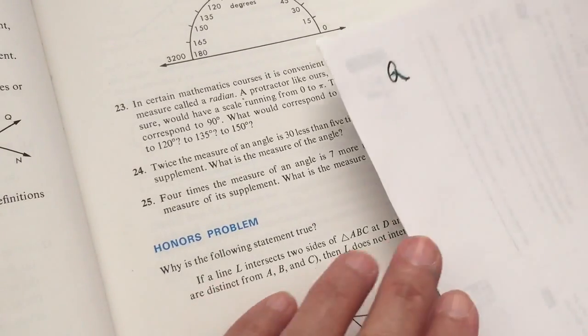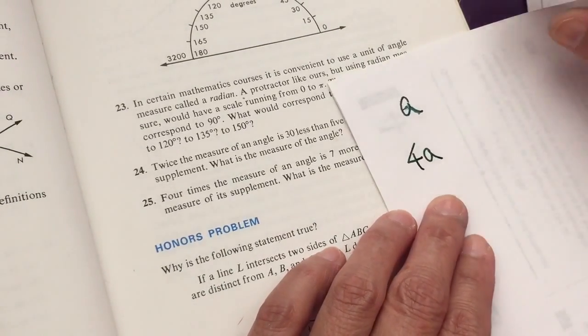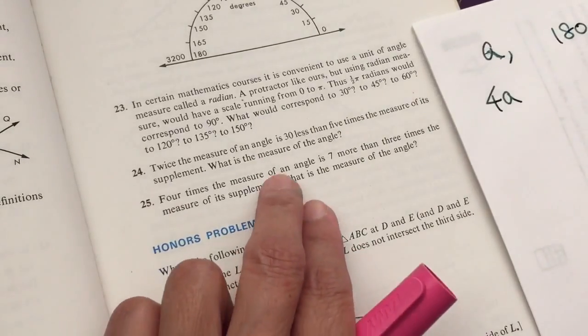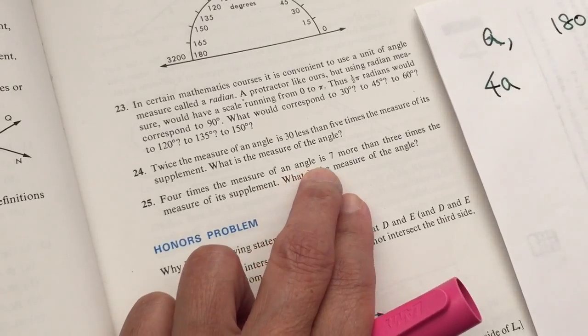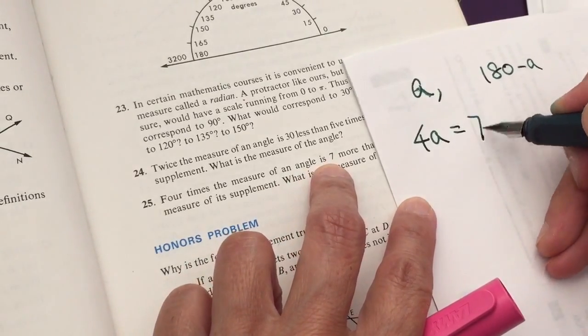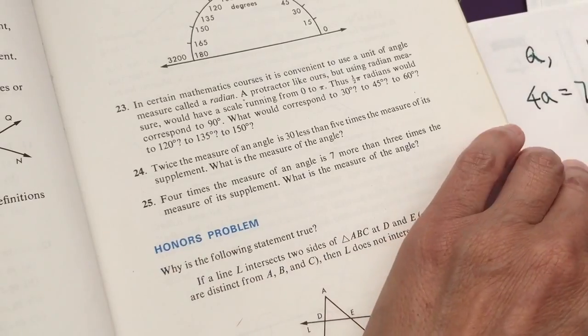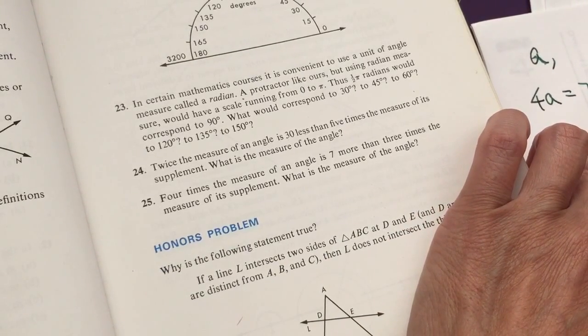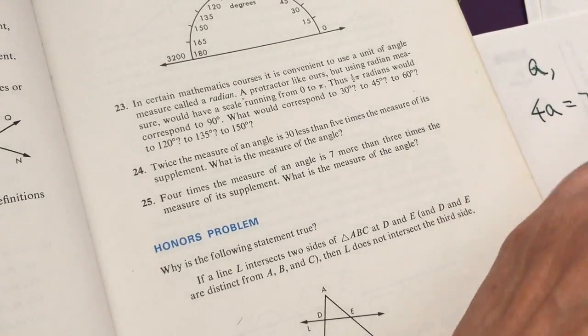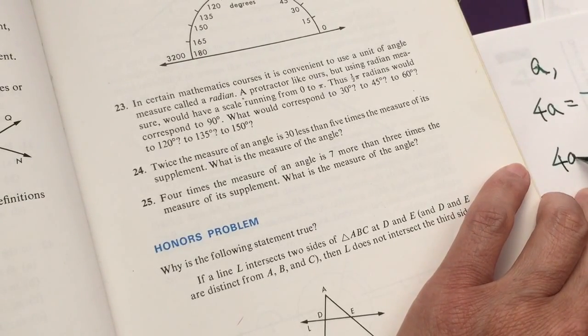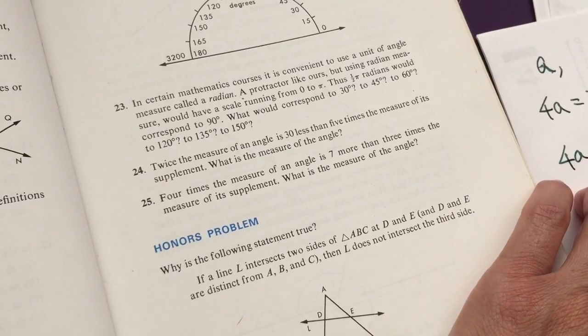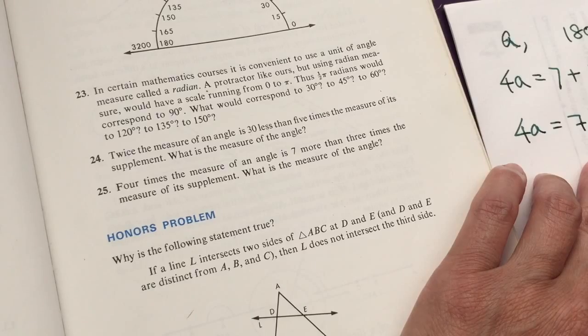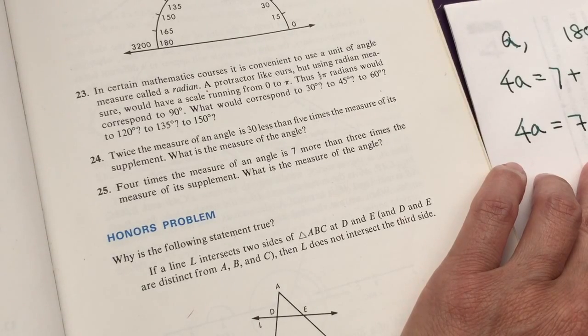So four times the measure, the measure of the angle, we say it A. So four times, let's do it together so that you can see. Four times the measure of an angle. So it's 4A and the angle and its supplement is 180 minus A, right? So four times the measure of an angle is seven more than three times. Seven more than three times the supplement of such angle. Is that easy?